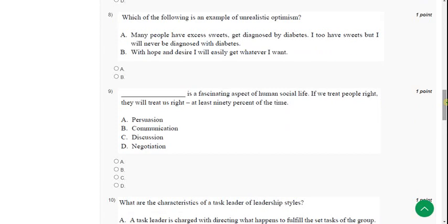Moving on to the eighth question. Which of the following is an example of unrealistic optimism? It means by judging a one person and we are feeling that someone feel that they will not get much negative than compared to the other person. So in that meaning, A could be the answer. Because many people have excess sweets, get diagnosed with diabetes. Do have sweets but never be diagnosed with diabetes. There will be less impact of negative compared to another one. So according to that statement given in the lectures, option A may be the correct answer.